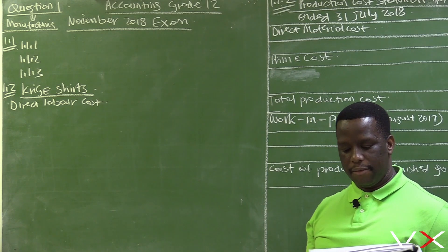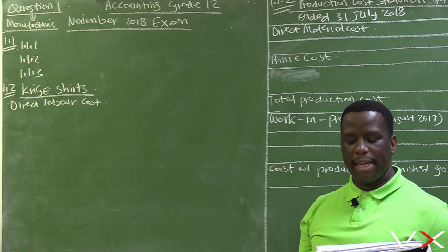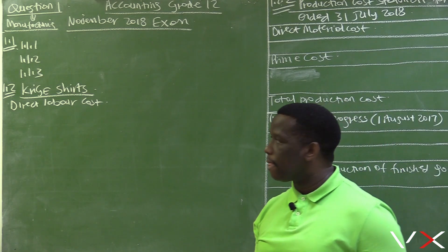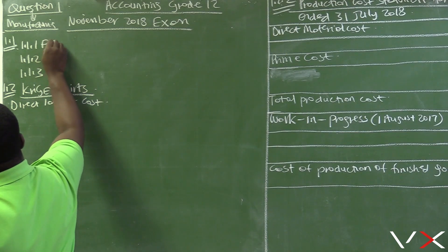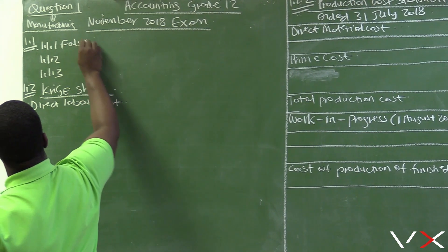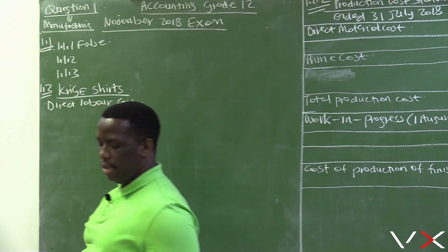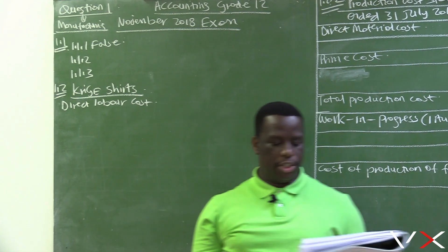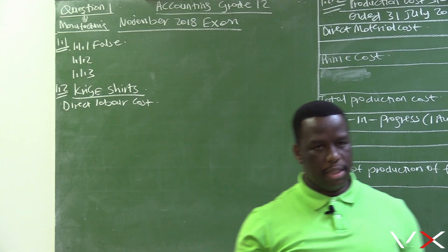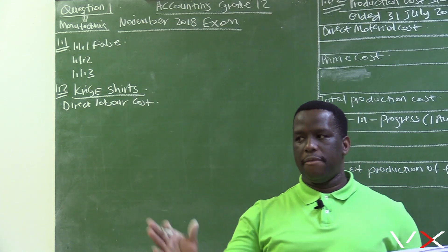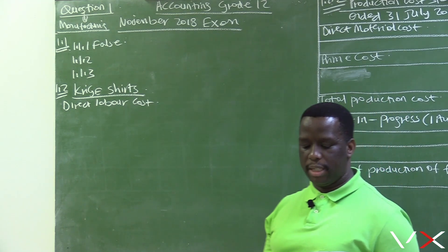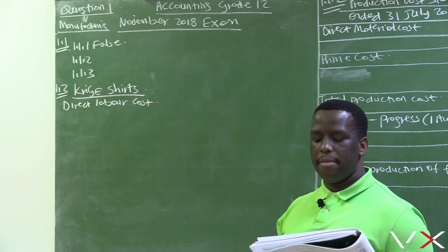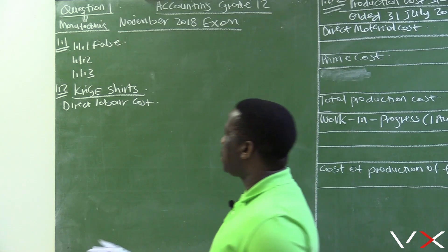Let's look at these statements to see if they are true or false. 'Bad debts are an administration cost.' This statement is false — bad debts fall under selling and distribution cost. That is why when you are dealing with this transaction, you need to keep the three departments in mind: the admin one, the factory, and the selling and distribution. Bad debts are something that has to do with sales.